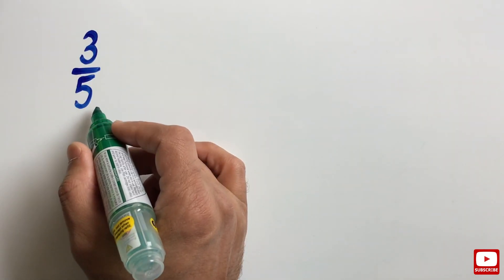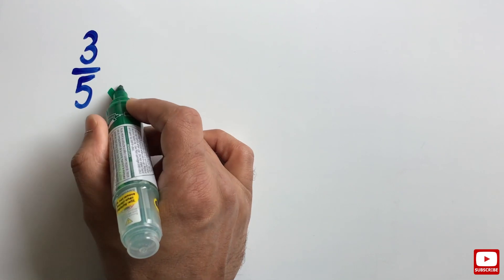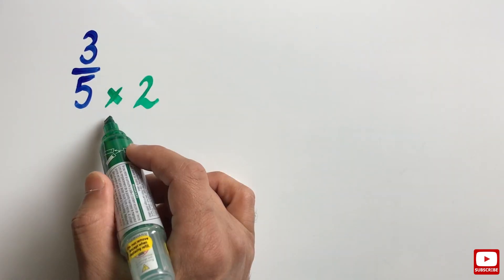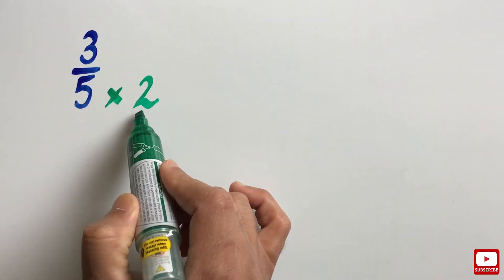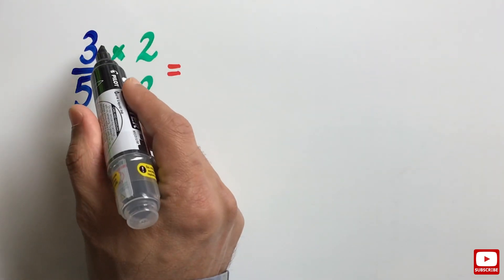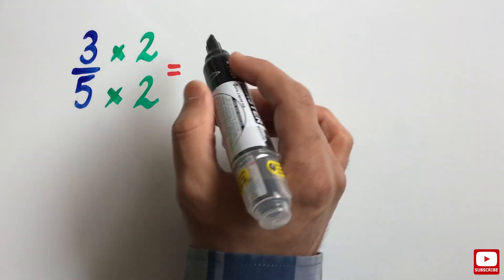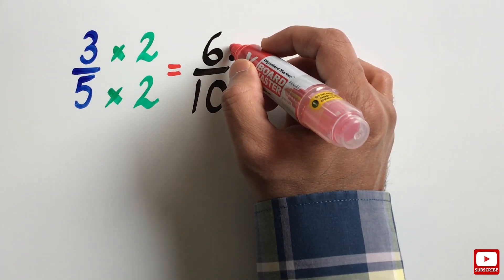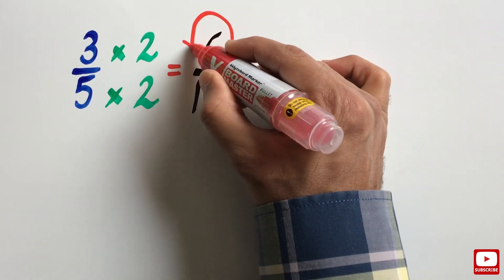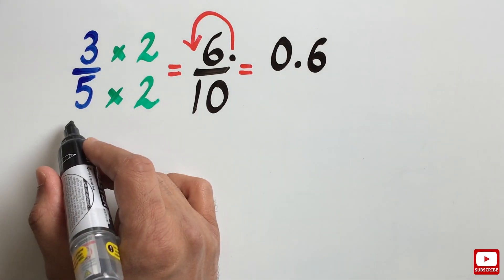Let's say we need to convert the fraction 3 over 5 into its decimal form. To rewrite this fraction so that the denominator is a power of 10, we need to multiply the denominator by 2. And if we multiply the denominator of a fraction by a number, we must also multiply the numerator by the same number. When we multiply both the numerator and denominator by 2, we get the equivalent fraction 6 over 10. Since we are dividing by 10, we move the decimal point one place to the left, which gives us 0.6 — the decimal form of 3 over 5.